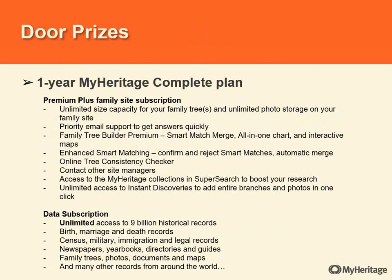Smart matches are based on matches between two family trees, and it's possible people entered wrong information — not deliberately, maybe they just don't know. Feel free to contact other site managers and ask about their information, or if you know the correct information, help them get their tree more accurate. The smart match is based on collaboration between all of us, and we need to pitch in to help people make their trees more accurate — this helps the entire community. Also always ask what the source is for any information you take.